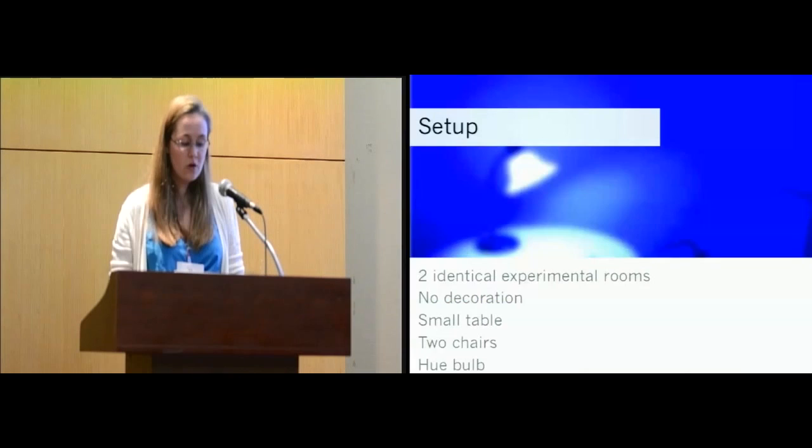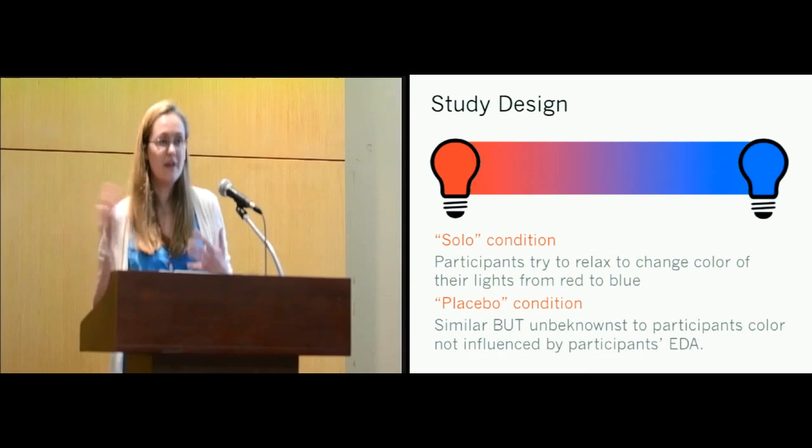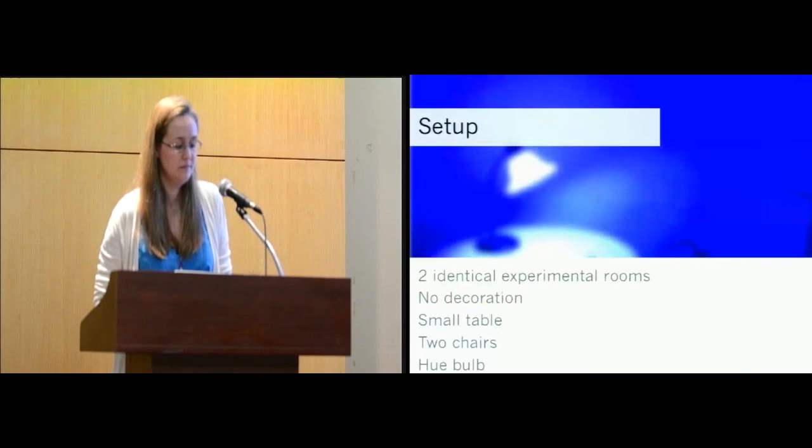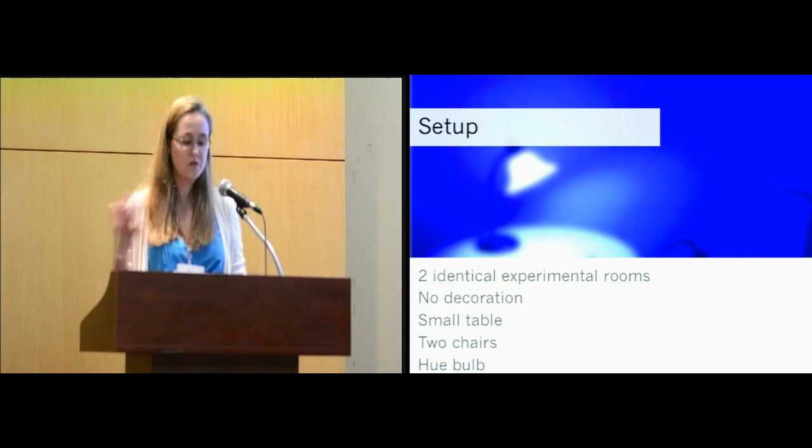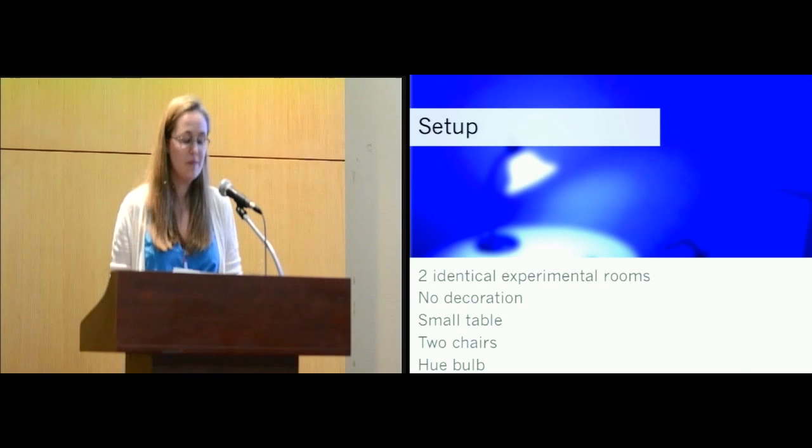The order of the trials were randomized, and after each trial, participants completed a short questionnaire about their perceptions of the system. In terms of the setup of the space, we conducted the study in two identical experiment rooms, which contained no personal decorative items to help give participants nothing to focus on but the study. In each space, there was a small table, some chairs, desk lamps which contained the Philips hue bulbs, and the Android phone that controlled the mood light system.